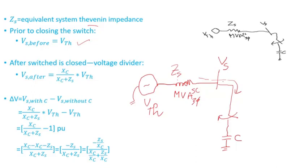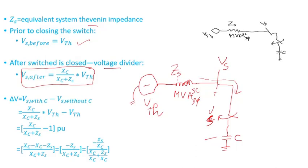After the switch is closed and the capacitor bank is in service, we can apply a voltage divider. VS after closing the switch equals the impedance of the capacitor bank divided by the sum of the capacitor bank impedance plus the equivalent Thevenin impedance, times the Thevenin voltage. That's the Thevenin voltage divider applied here.